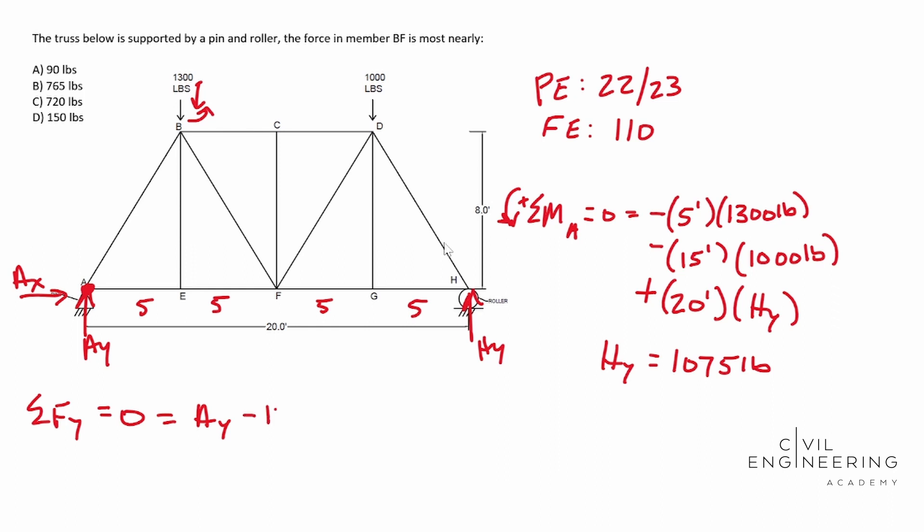And that is equal to aY, minus 1300 pounds because it's acting in the negative direction, minus 1000 pounds because it's acting in the negative direction, plus our HY, which if you remember, that's going to be 1075 pounds. All right. And so when we solve for aY, you end up with 1225.